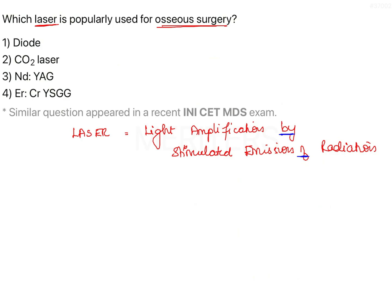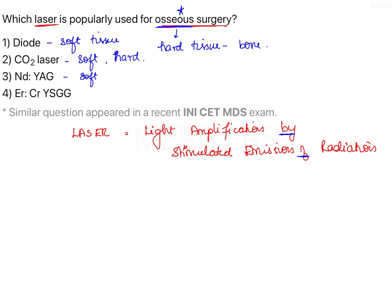Getting back to our question: we have to choose the laser popularly used for osseous surgery. The term osseous denotes hard tissue, that is bone. Diode laser is preferable for soft tissue procedures only. Carbon dioxide laser is also a soft tissue laser, though recently FDA has approved it for hard tissues as well. ND:YAG laser is again a soft tissue laser.